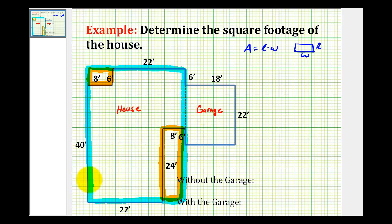Looking at this side of the blue rectangle, from here to here is 40 feet. But from here to here would be the same as this length here, which is 6 feet. So this entire side would be 46 feet. Then looking at this side down here, from here to here is 22 feet. Since this is 8 feet here, this segment here would also be 8 feet. So this side is 46 feet long for the blue rectangle, and this side of the blue rectangle would be 30 feet.